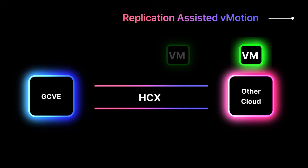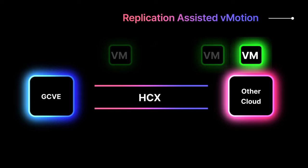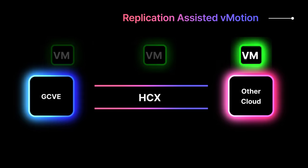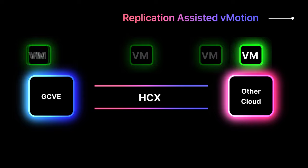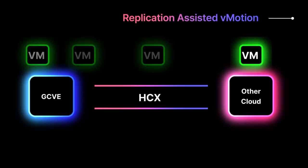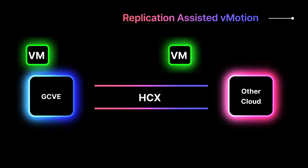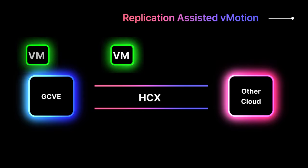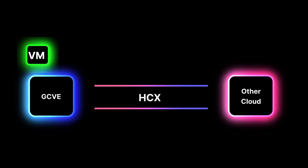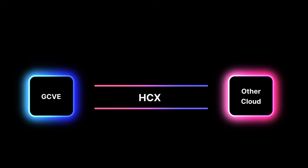HCX replication-assisted vMotion enables bulk migrations and no-downtime migrations from on-premises or from another cloud provider to Google Cloud VMware Engine. Whilst migrations are in progress, mobility-optimized networking can be used to provide optimal traffic routing under certain scenarios.